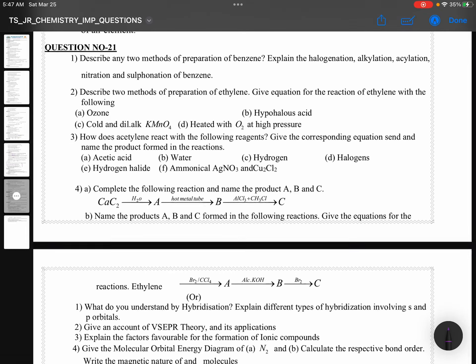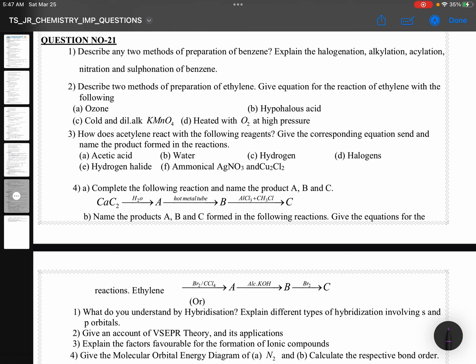Describe any two methods of preparation of benzene. Explain the halogenation, alkylation, acylation, nitration, and sulfonation of benzene. Two methods of preparation of ethylene. Reactions with ozone, hypohalous acid, Baeyer's reagent, combustion. Acetylene reactions with acetic acid, water, hydrogen, halogen, hydrogen halide, ammonical silver nitrate. Generally, the question will be with two methods of preparation and two properties or four properties. That's all.